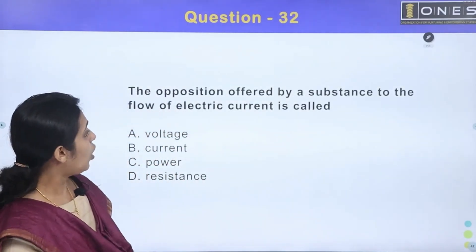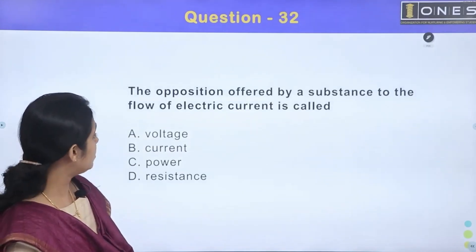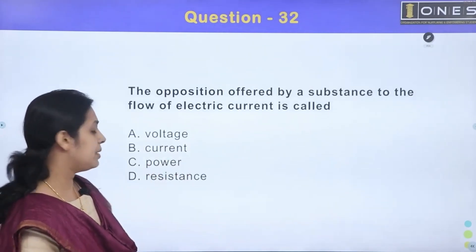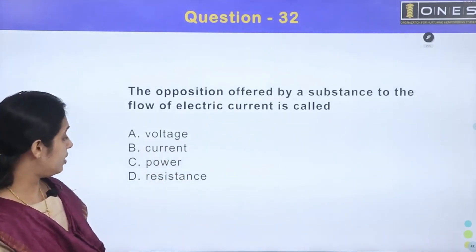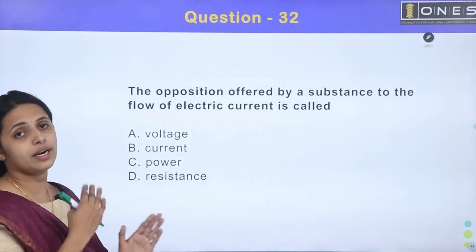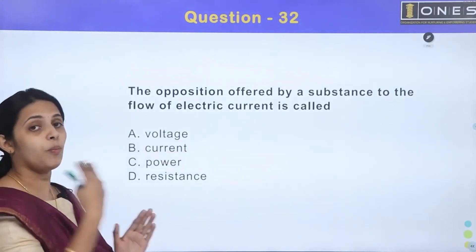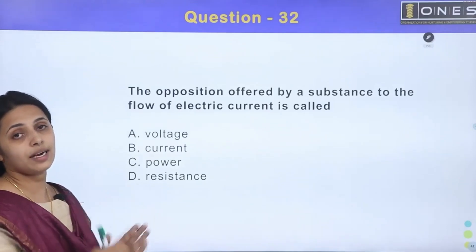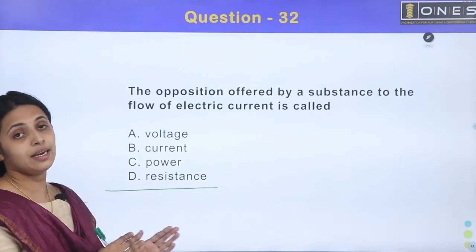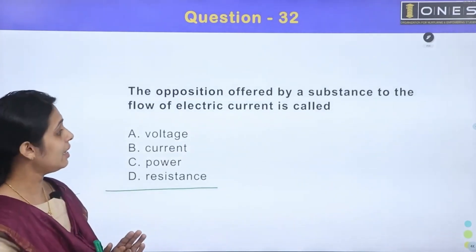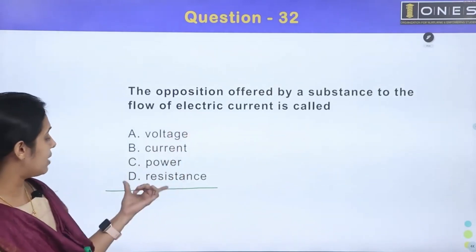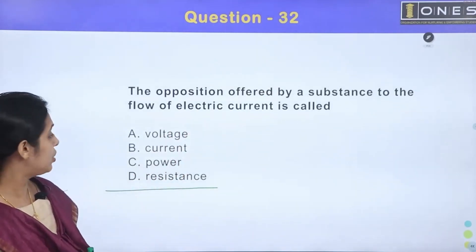Next question. The opposition offered by a substance to the flow of electric current is called: Option A Voltage, Option B Current, Option C Power, Option D Resistance. This is what we call the opposition to current flow in a conductor. What is the name of that factor? That is the resistance. So what is the answer? Option D is resistance.